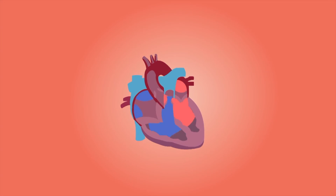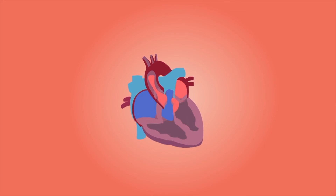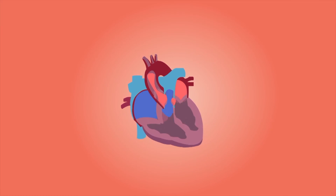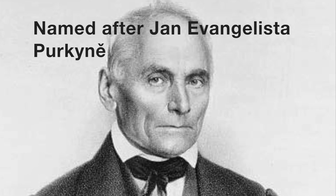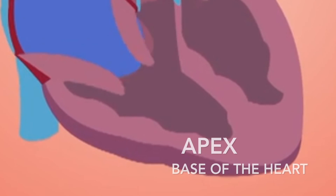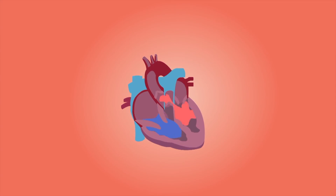The wave of electrical excitation moves across both atria, which respond by contracting — the right one slightly before the left. The wave of electrical activity then reaches the second pacemaker, the atrioventricular node, which conducts the electrical activity through the Purkinje fibres. These Purkinje fibres pass through the septum of the heart, deep into the walls of the left and right ventricles. The ventricle walls begin to contract from the apex, which is the base, upwards, ensuring that blood is ejected efficiently from the ventricles.